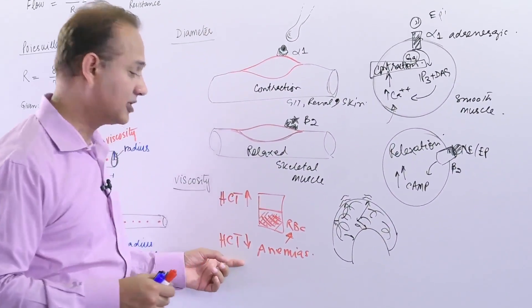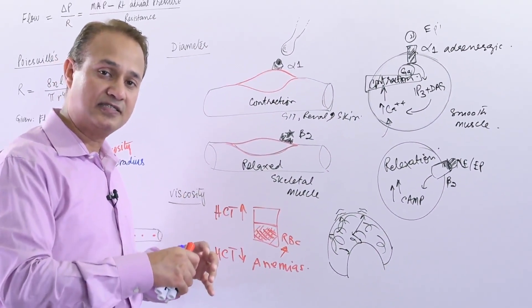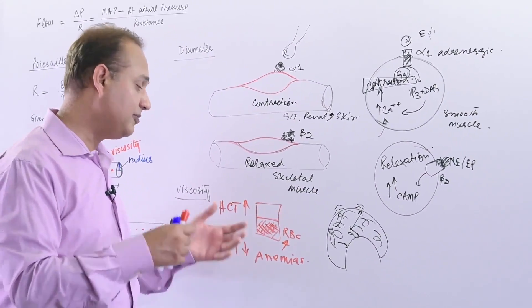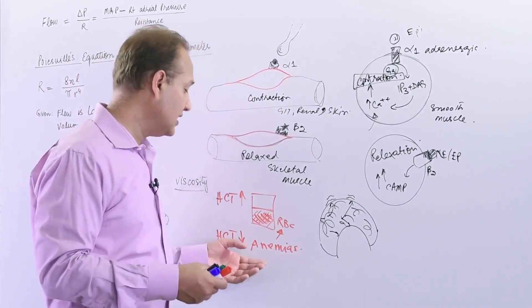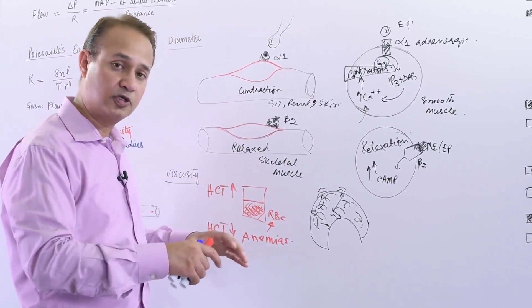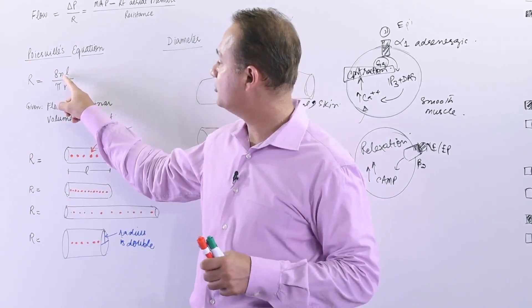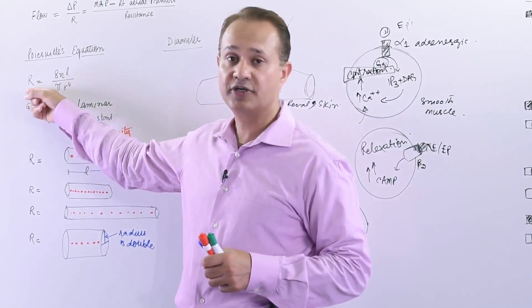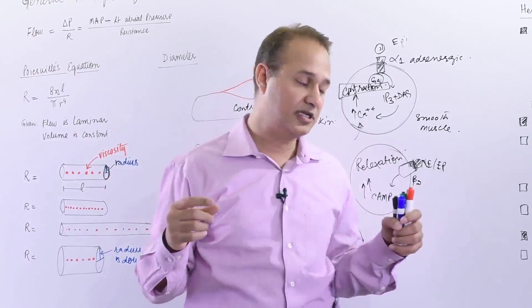How about reducing the hematocrit? Anemias. If the number of RBCs is reduced because of anemias of various types or if the patient has a problem with the proteins, the result is that the hematocrit would go down. When the hematocrit would go down, the viscosity will reduce. That will mean resistance will reduce. That means flow would increase. So flow and pressures both increase.